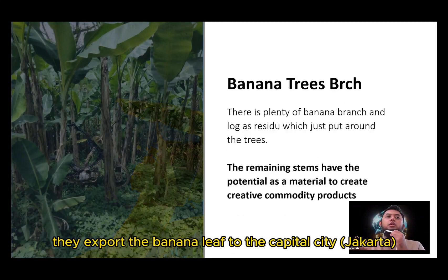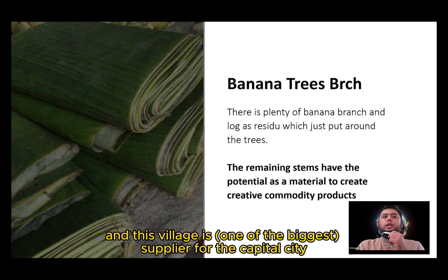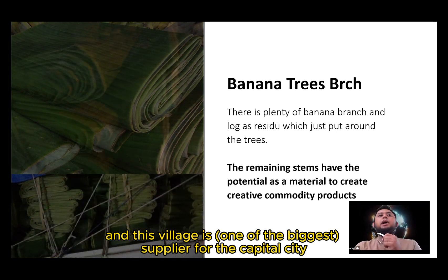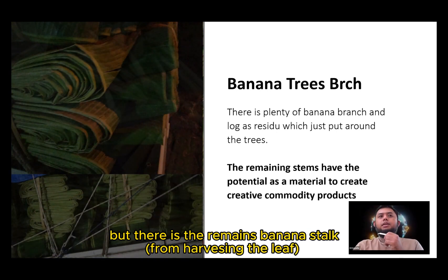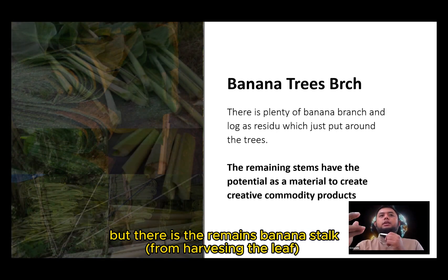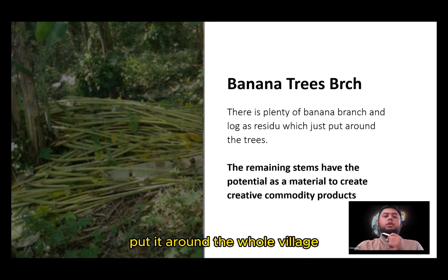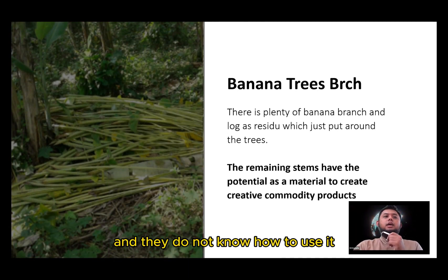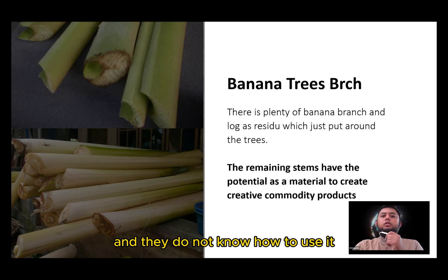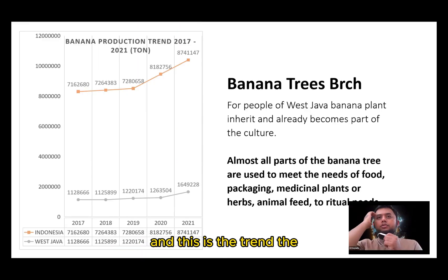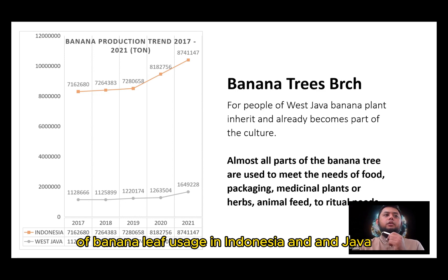They export the banana leaf to the capital city, and this village is the supplier for the capital city. But there are remains of bananas — they just put them around the trees and around the home fields, and they do not know how to use them.